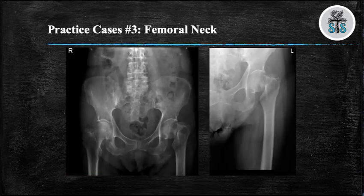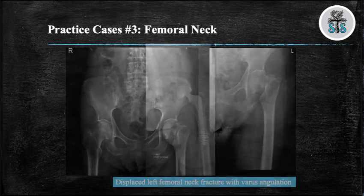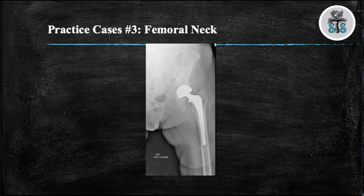Case 3: We have two views, AP pelvis and AP left hip, demonstrating a displaced left femoral neck fracture with varus angulation. There are two different treatment options, but in this case it was treated with a left hemiarthroplasty.